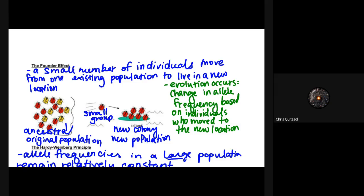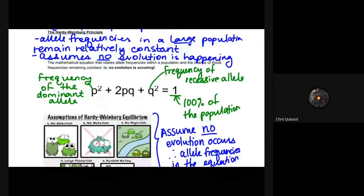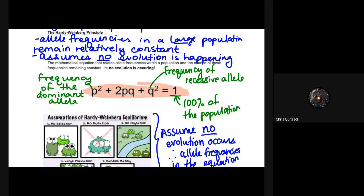And then the last one that I want to talk about here with you all today is the Hardy-Weinberg principle. For those of you who are clever enough to see this, it is a perfect square trinomial. Those of you who remember your grade 11 math, I know it's been probably a long time for some of you. The idea here is that the allele frequency in a large population will always remain relatively constant, and this assumes that no evolution is happening.